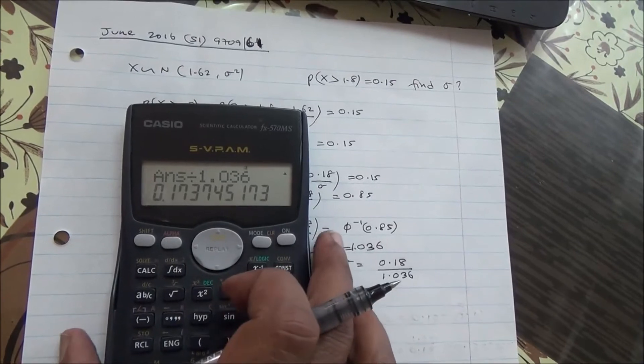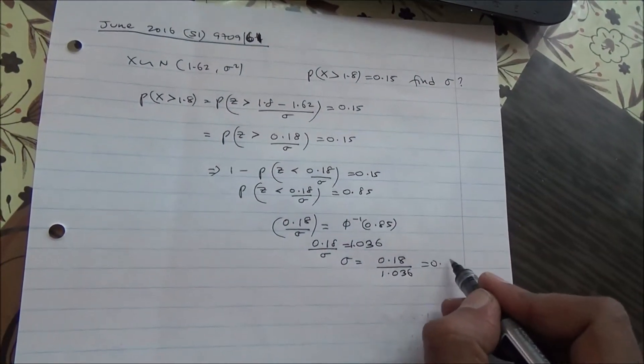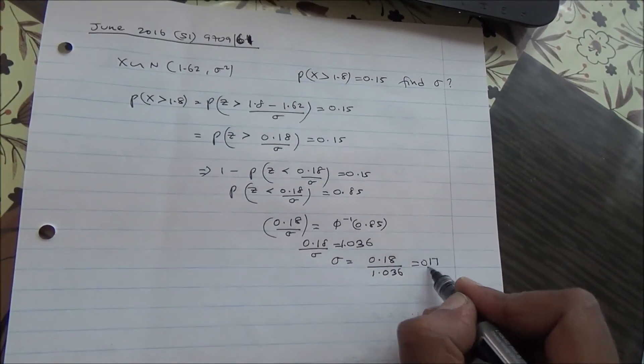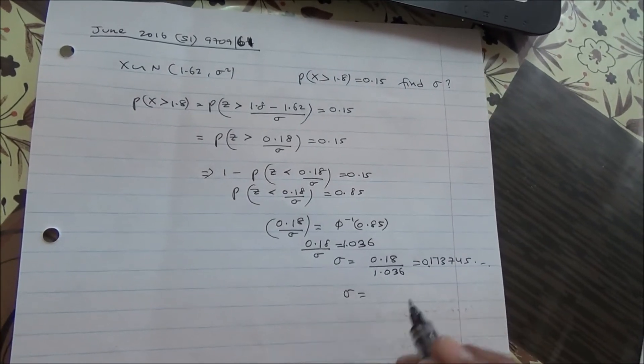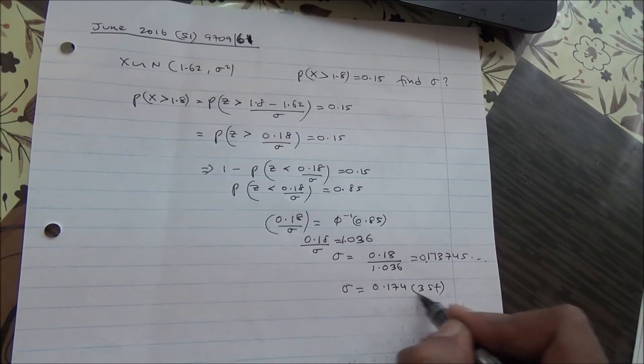So divided by 1.036. So 0.173745. Let us say sigma is approximately 0.174 to 3 significant figures.